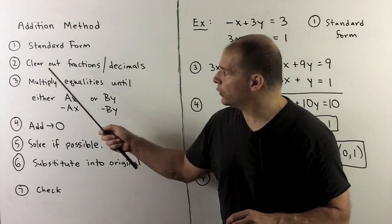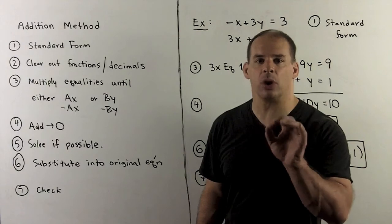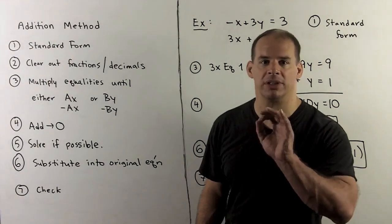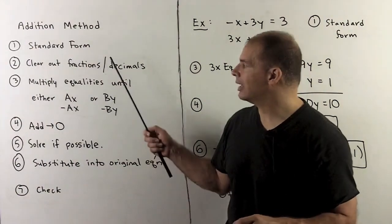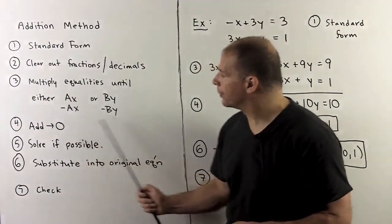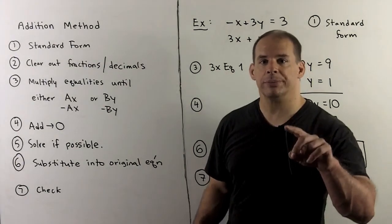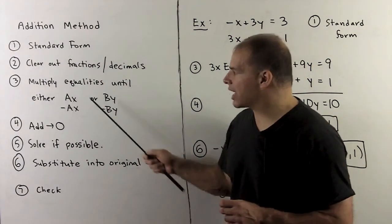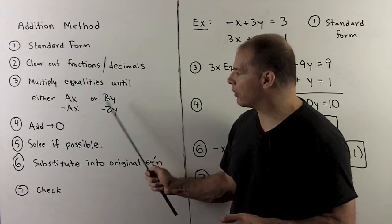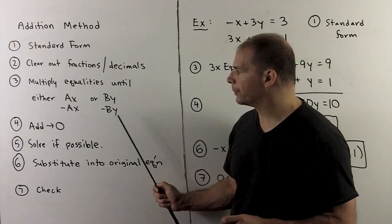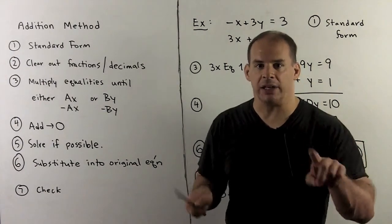Lining up the columns makes future arithmetic easier, and we clear out any fractions or decimals by multiplying through by whatever it takes to get all integers. The important part is to then multiply our equations through by numbers so that in the x-column we have ax over minus-ax, or in the y-column we have by over minus-by.